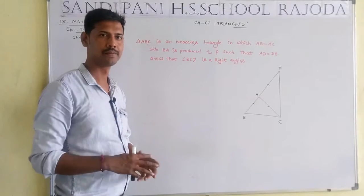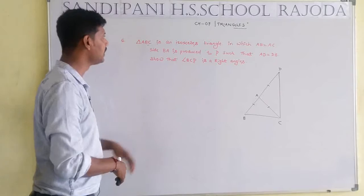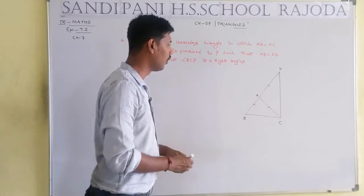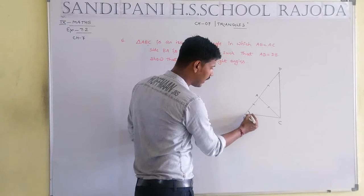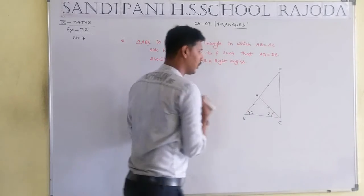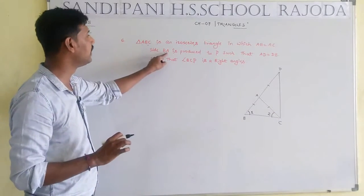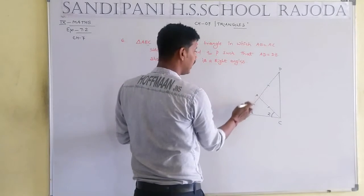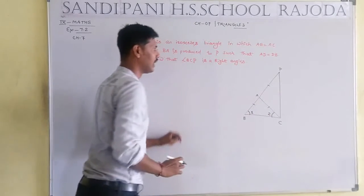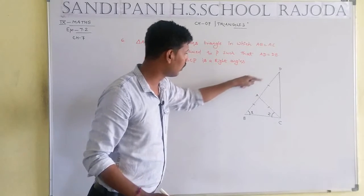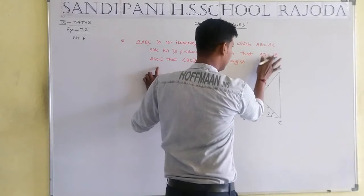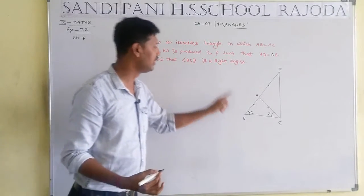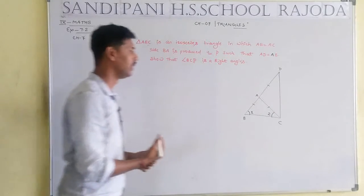Question number 6: Triangle ABC is an isosceles triangle in which AB equals AC, so the base angles are equal. Side BA is produced to D such that AD equals AB. We have to prove that angle BCD equals 90 degrees.